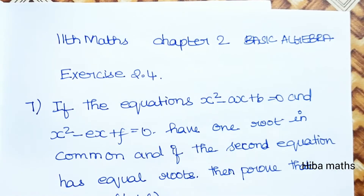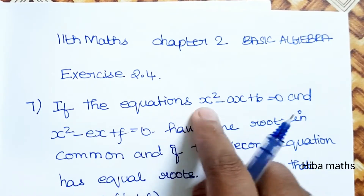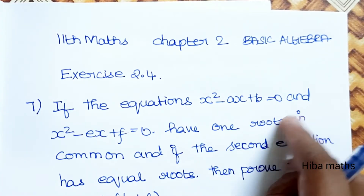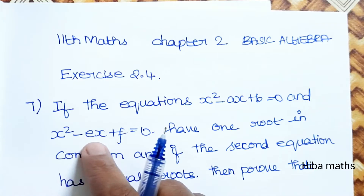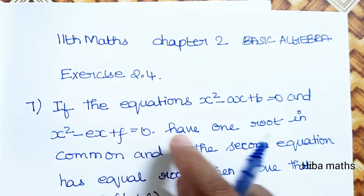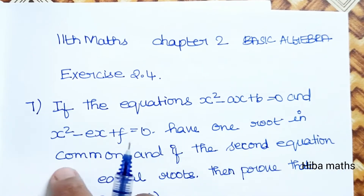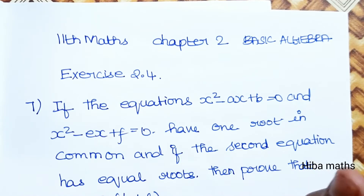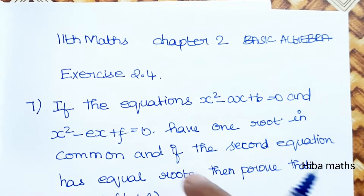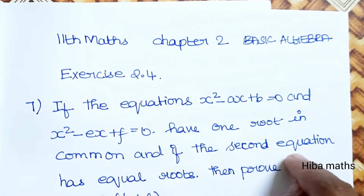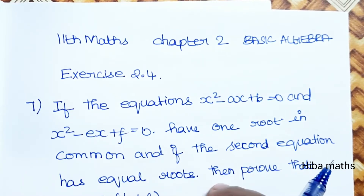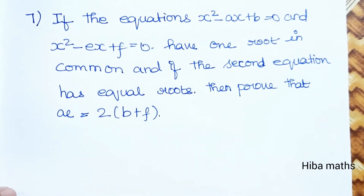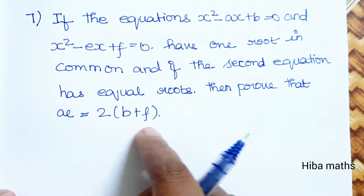Exercise 2.4, question 7: If the equations x² - ax + b = 0 and x² - ex + f = 0 have one root in common, and if the second equation has equal roots, then prove that a·e = 2(b + f).